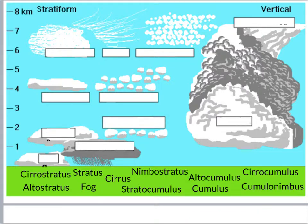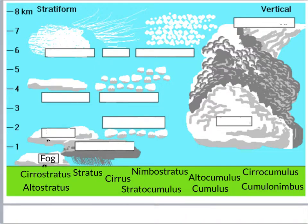Let's play a little matching game. The first one down near the ground — what would that be? Take a look at your word bank. A cloud on the ground is called fog. Next up: the cloud that is low, flat, and raining — that would be nimbostratus.